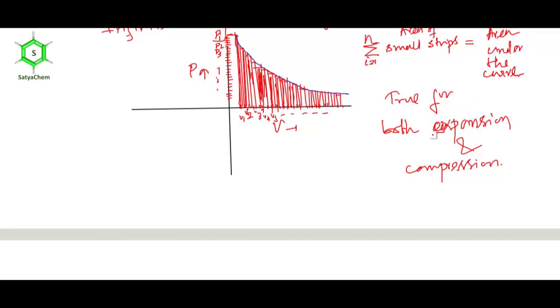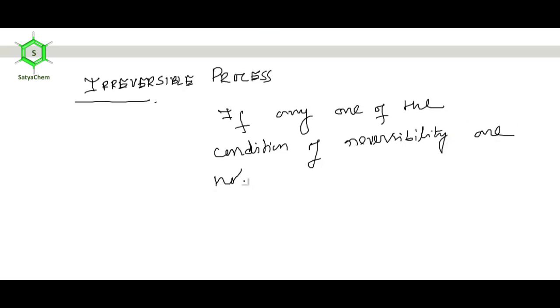Next: irreversible process. If any one of the conditions of a reversible process is not maintained, then it is an irreversible process. This is very simple.